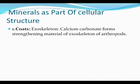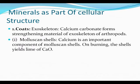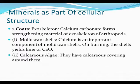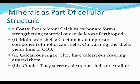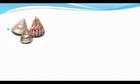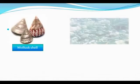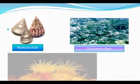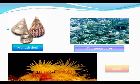Minerals play a role in cellular structure such as coats or exoskeleton. Calcium carbonate forms the strengthening material of the exoskeleton of arthropods. Calcium is an important component of molluscan shells; on burning the shells, it yields lime or calcium oxide. The calcareous algae have a calcareous covering around them. Corals secrete calcareous shells or coralite. Here we find mollusk shell, calcareous algae, and corals — they are all mineral-based structures.